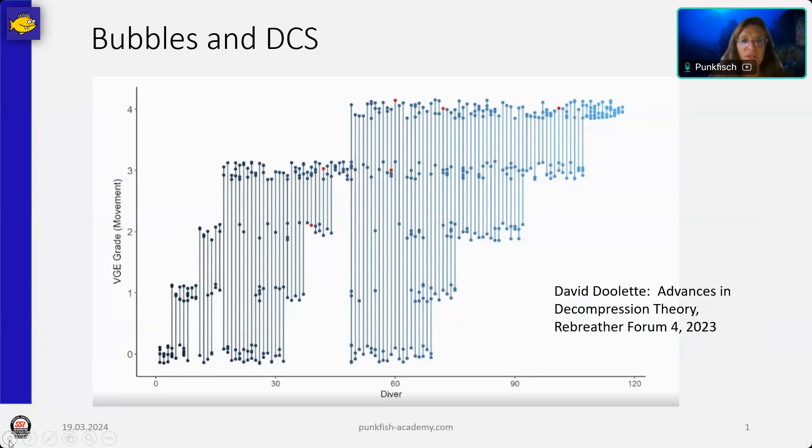There are just some things we know that will make our dive a little bit safer or the risk a little bit lower. So we know for sure that a lower gradient factor high leads to a lower risk of having DCS. That's it. That's what we definitely know from statistics, from accident analysis. It does not mean if you dive to a very low gradient factor high you will never get DCS, but it means your risk is lower.